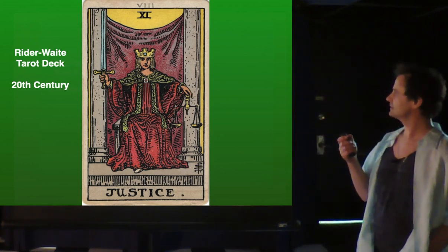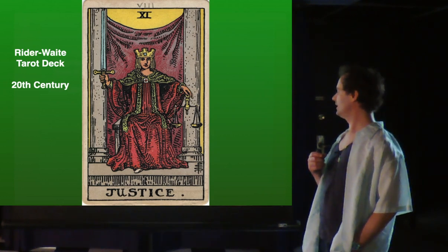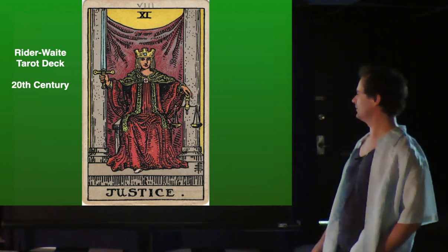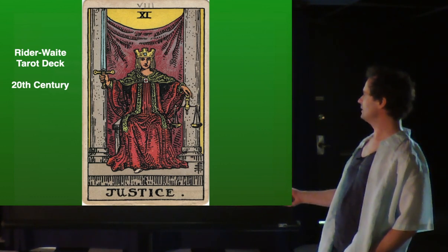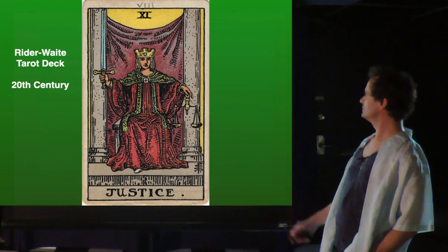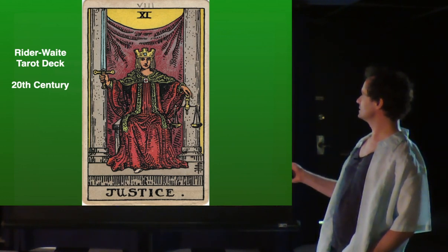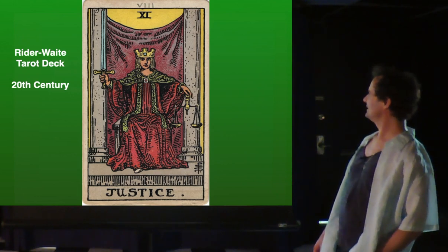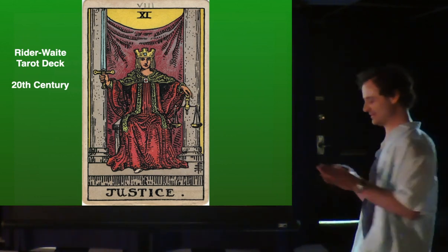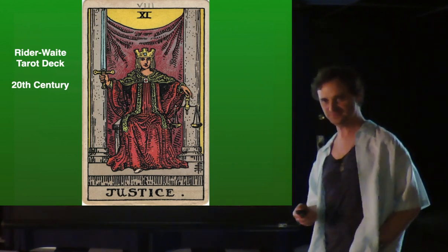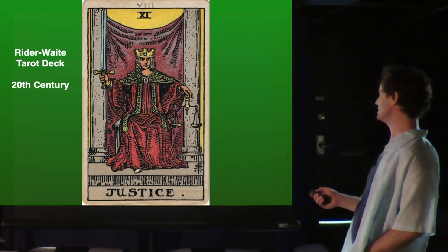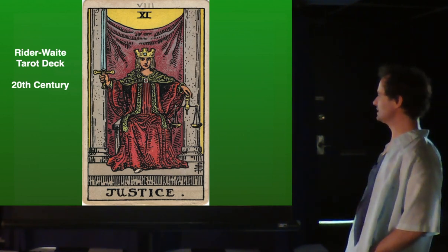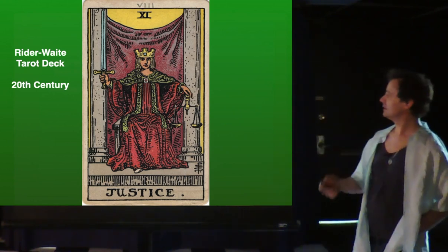Next is the Rider Waite deck. It's very similar but takes on a more monotone appearance. It's basically red and yellow. You'll note here at the top it says 8, and then it says 11 here. I'll talk about that switch. Green is the color of Venus. The sword is steel, a metal of Mars.